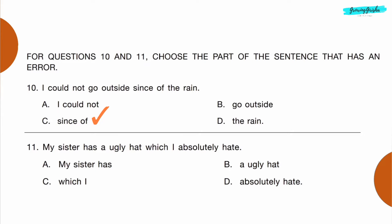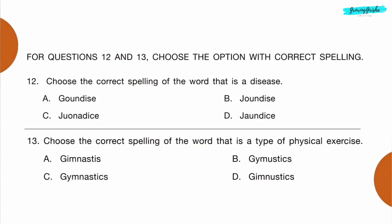Option C: 'since of' is wrong — it should be 'because of.' Question 11: My sister has a ugly hat which I absolutely hate. Option B: 'a ugly hat' is wrong — it should be 'an ugly hat.'